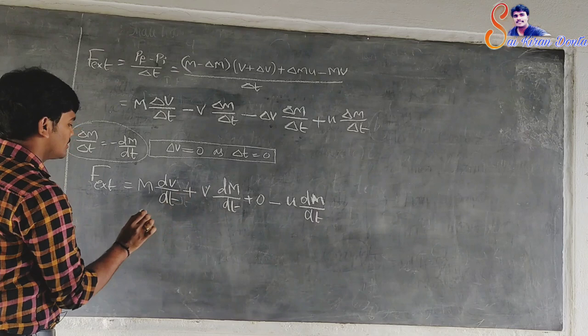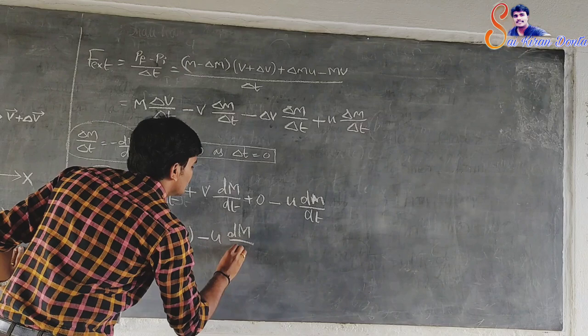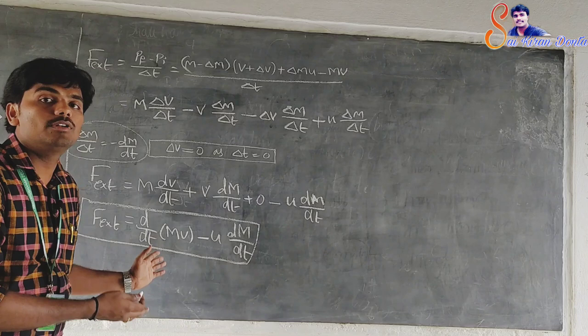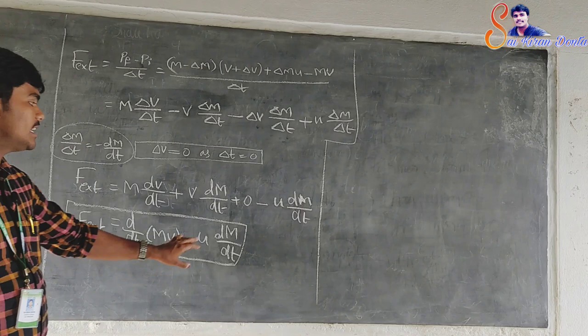This equation represents Newton's second law applied to a body of variable mass. It is obvious from the equation that the term d by dt of (MV) is not equal to the F external force unless the ejected mass comes out with zero velocity.